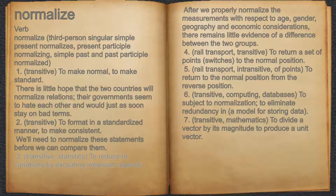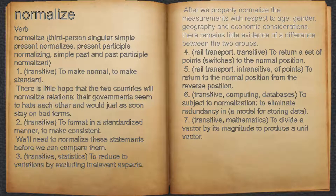3. Transitive, statistics: to reduce variations by excluding irrelevant aspects. For example, after we properly normalize the measurements with respect to age, gender, geography, and economic considerations, there remains little evidence of a difference between the two groups.